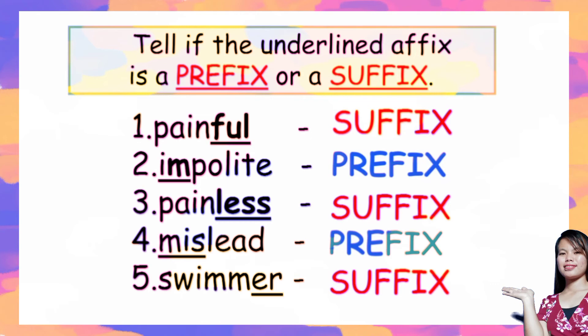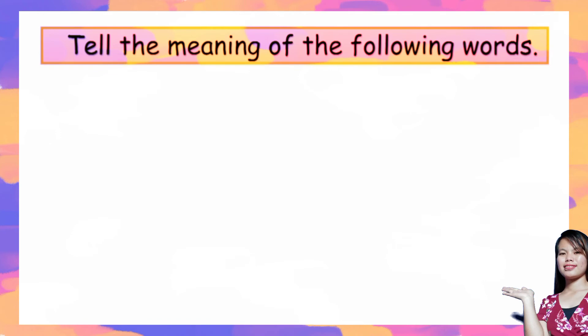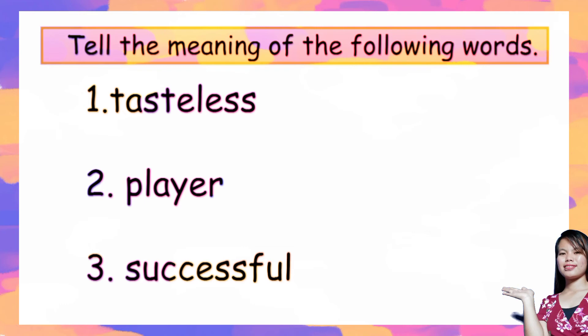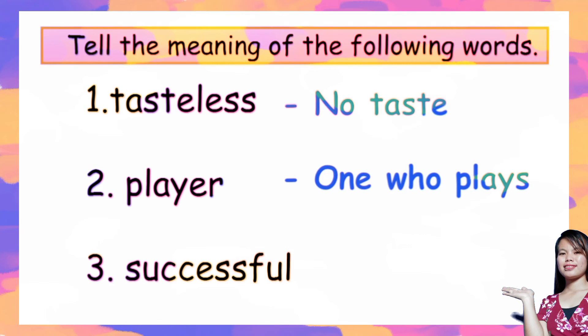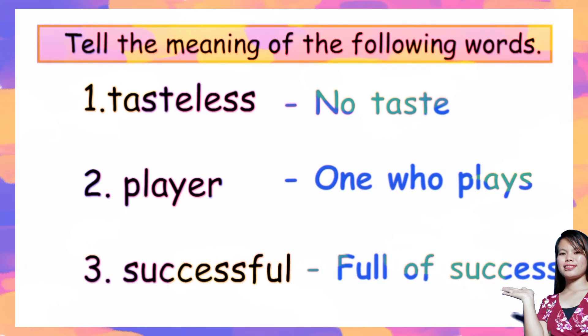Let us have another set of exercises. Tell the meaning of the following words. Number one: 'tasteless' — it means no taste because the suffix 'less' means without. Number two: 'player' — player is the one who plays. Number three: 'successful' — successful means full of success.